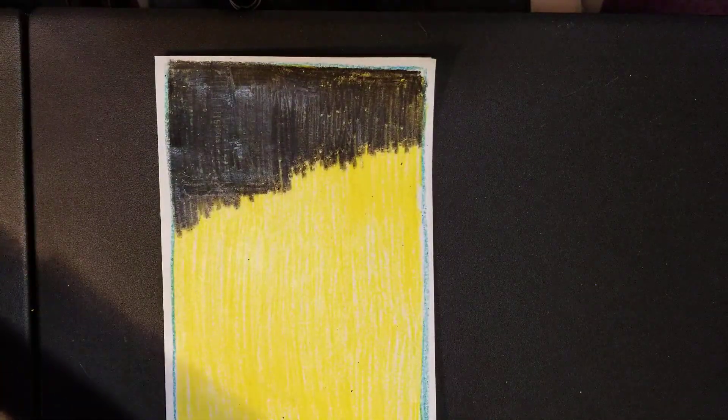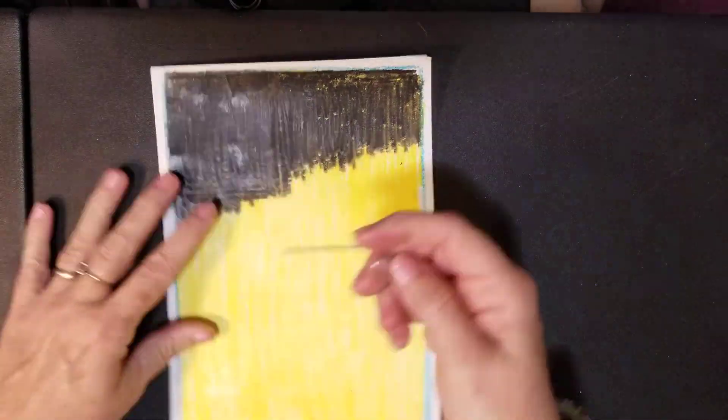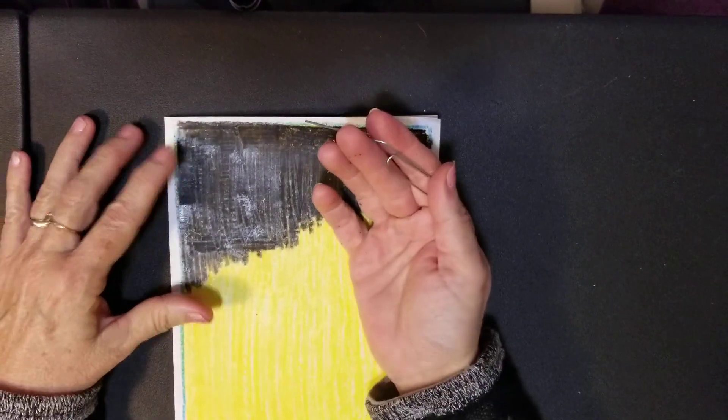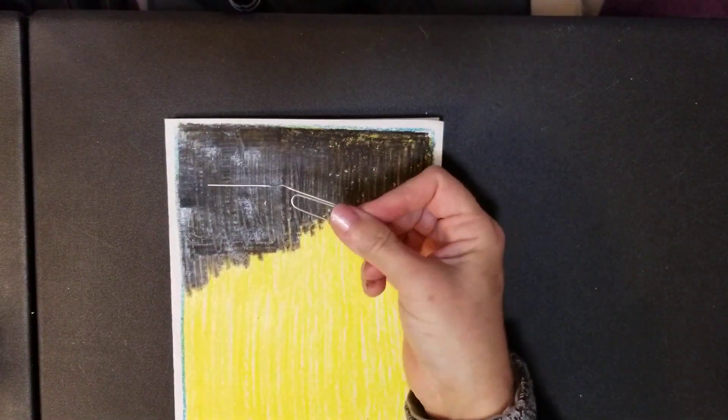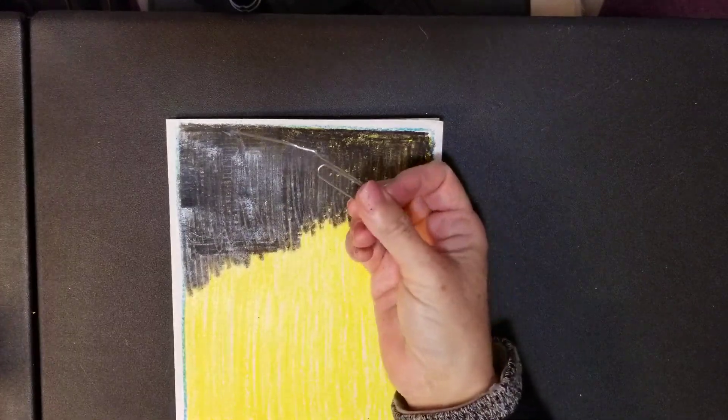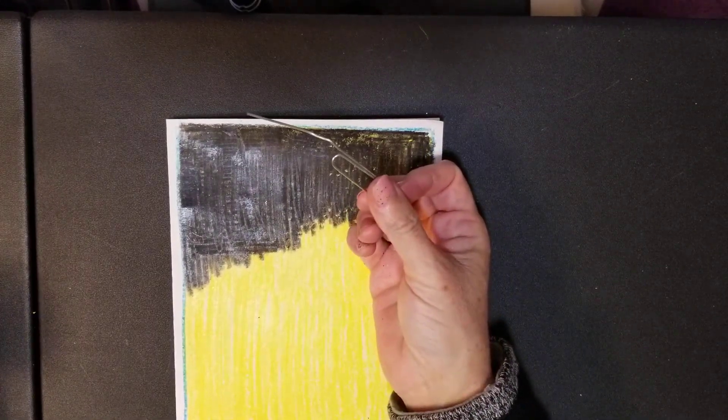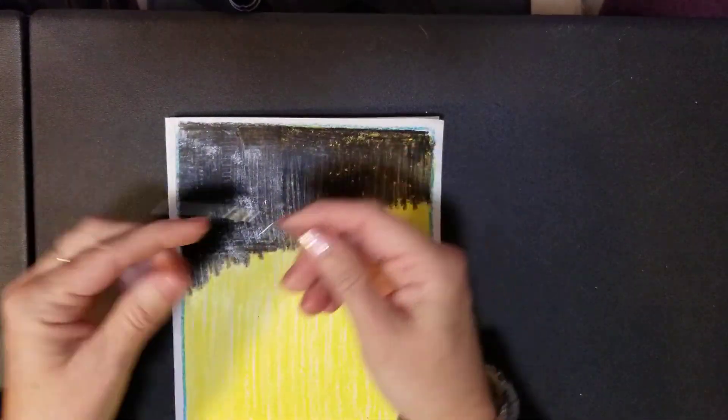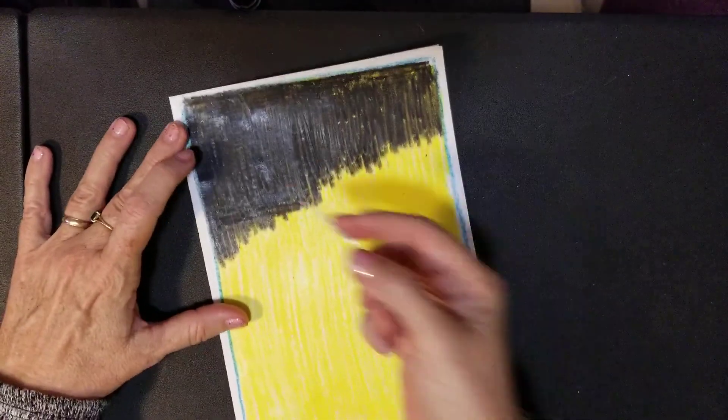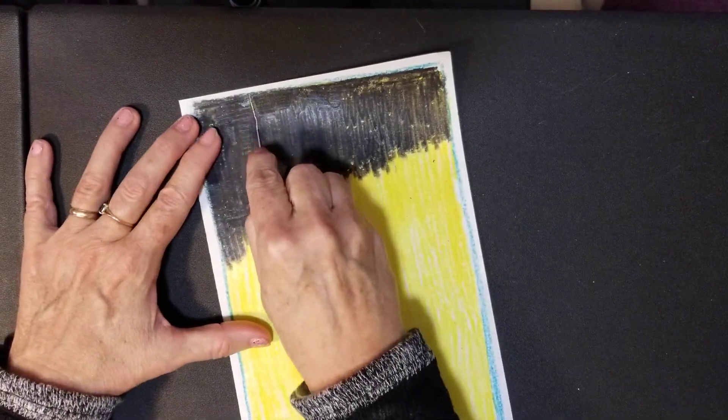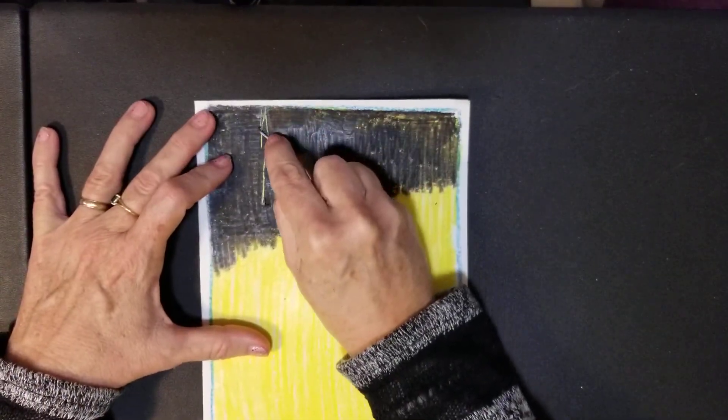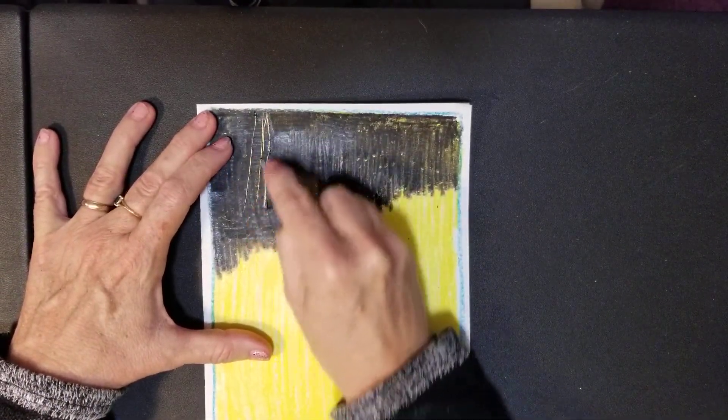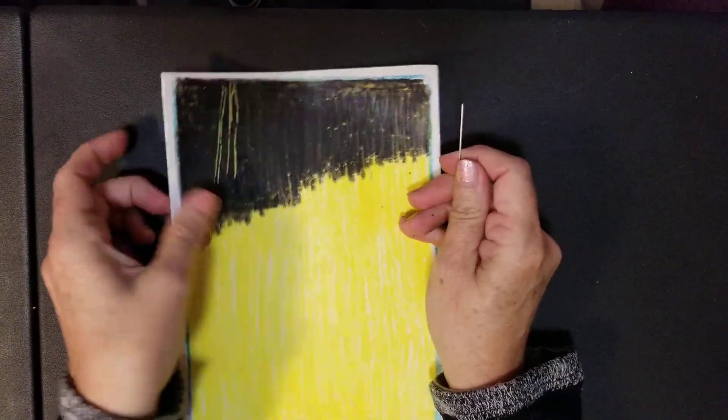As you can see, when I take a scratch tool—or the tool you can use at home could be something as simple as a paper clip that you've pulled apart—you can use the edge of it. I can draw right over top and get textures. See how you can see the yellow underneath?